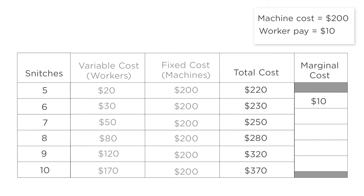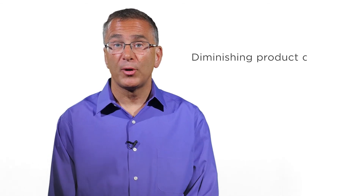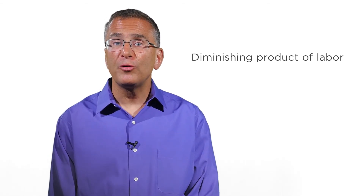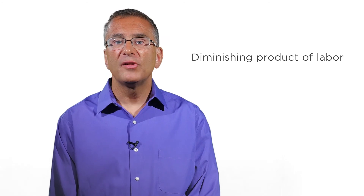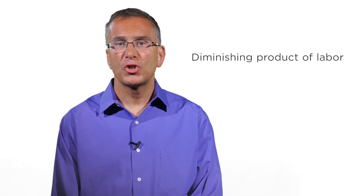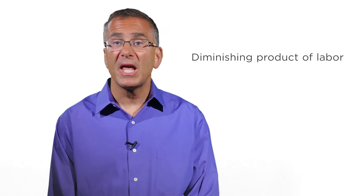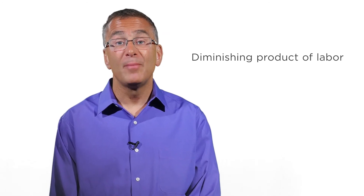This marginal cost changes as the firm produces more and more snitches. Going from six to seven snitches costs an extra $20, and going from seven to eight costs an extra $30. The marginal cost of production is rising as snitch production increases — we need more and more extra workers to produce one extra snitch on that one machine. This is consistent with the diminishing marginal product of labor: the next worker increases production less than the previous worker did, since they all have to share that one machine. So we need more and more workers to make that one additional snitch, and more workers cost more.